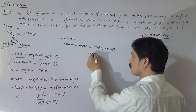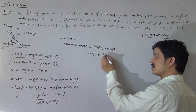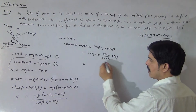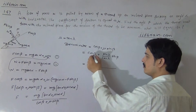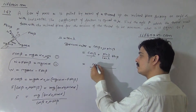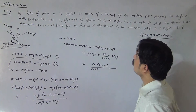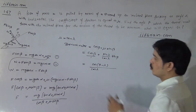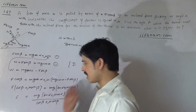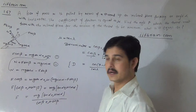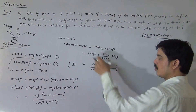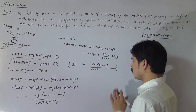Substituting mu equals tan lambda (which is sin lambda over cos lambda) into the denominator, we get cos beta plus (sin lambda / cos lambda) times sin beta. Taking cos lambda as the common factor, this becomes cos(beta minus lambda) divided by cos lambda, using the identity cos A cos B plus sin A sin B equals cos(A minus B). So F depends inversely on this denominator, which is the only variable term.